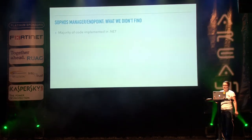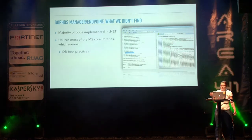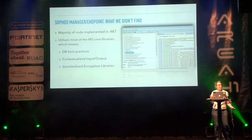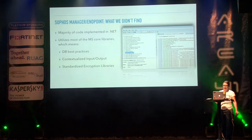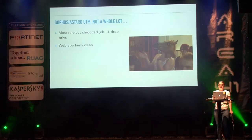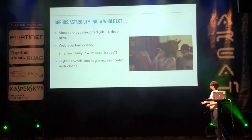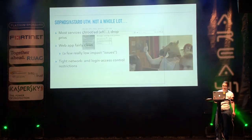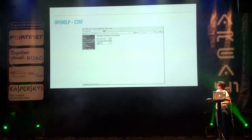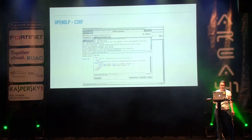Sophos was actually surprisingly not that bad. Most of the code was in .NET and they were using MS core libraries, which tend to be pretty good. Database best practices: stored procedures, parameterized queries. They were encoding their input and output pretty well and using encryption libraries that were not broken. Good job, Sophos. On the endpoint and management side, they dropped privileges. We didn't see a lot of web vulnerabilities — just some low-impact stuff like information leakage. Network and login access control restrictions were pretty locked down too. For OpenDLP, we just didn't find a lot because there really isn't a lot of functionality. We did find cross-site request forgery — you can trick somebody into creating a profile they didn't intend to create.